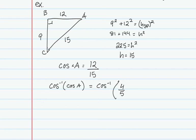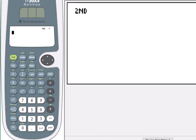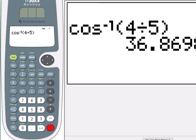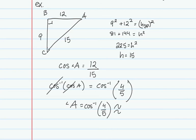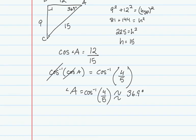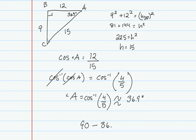Those are inverse operations, so angle A equals the cosine inverse of 4/5, which is approximately 36.9 degrees. Since angle A must be complementary to angle C, I do 90 minus 36.9, giving 53.1. So angle C is 53.1 degrees.